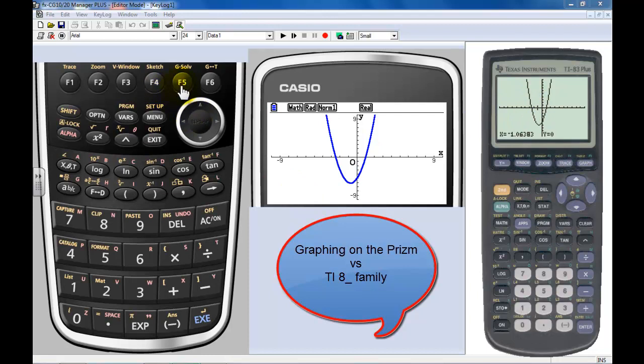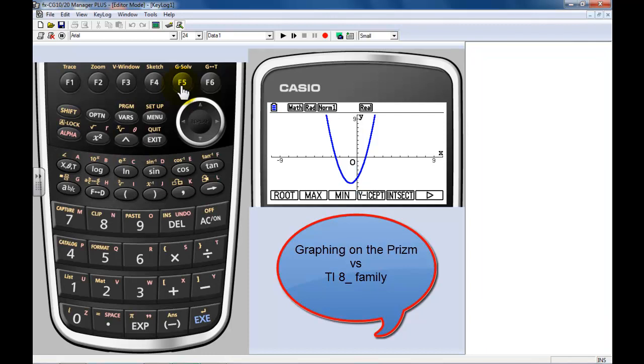In the Casio, we have a G-solve, which stands for your graphic solver. I press G-solve. I want to find the root. Notice the vocabulary is right there. I want to find the root of the equation. I didn't have to do anything. I didn't have to give it a left or a right. And I know there's more than one, so I press the over arrow, and there's the other.